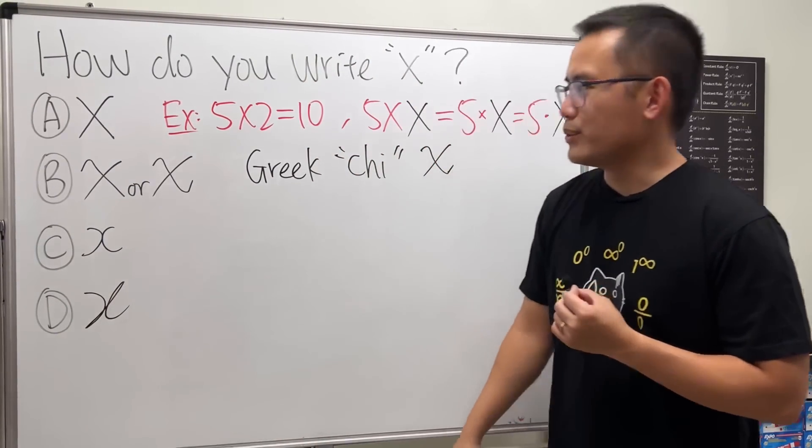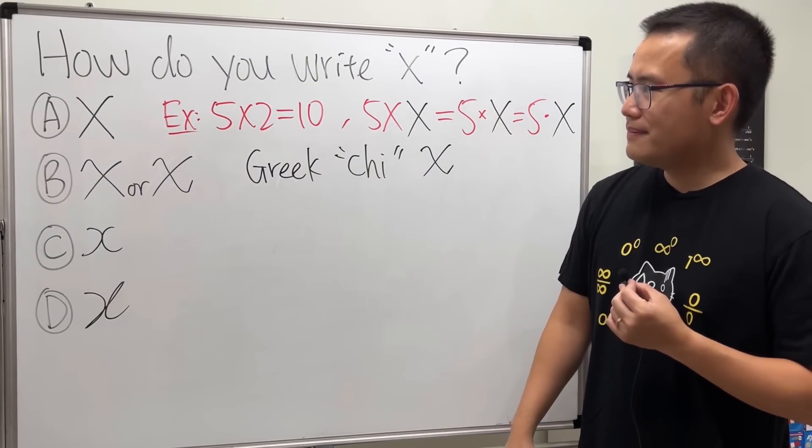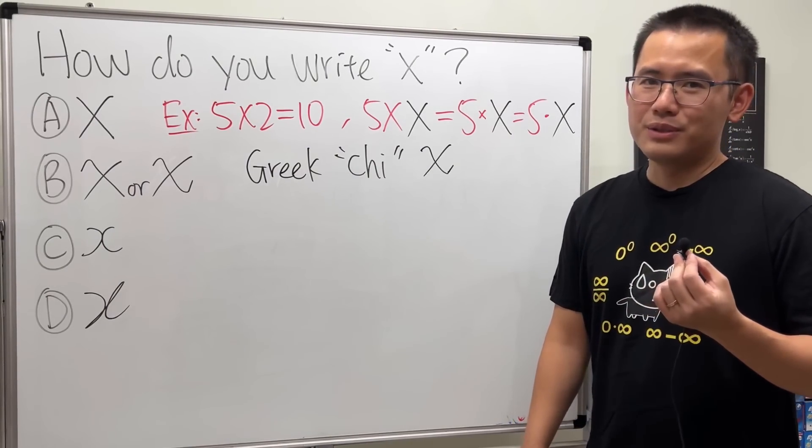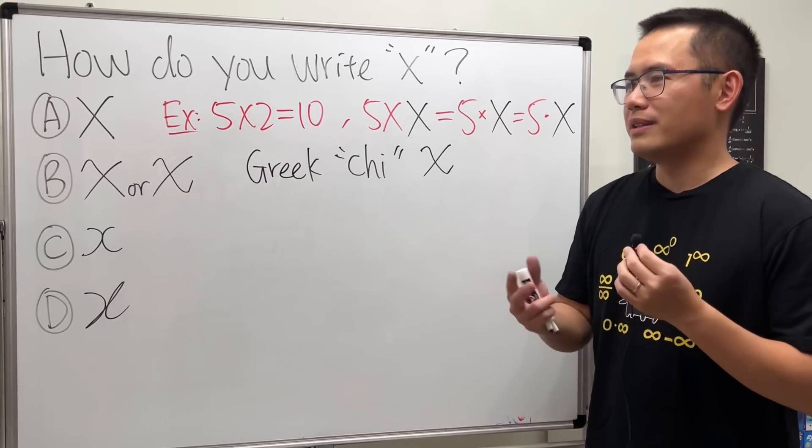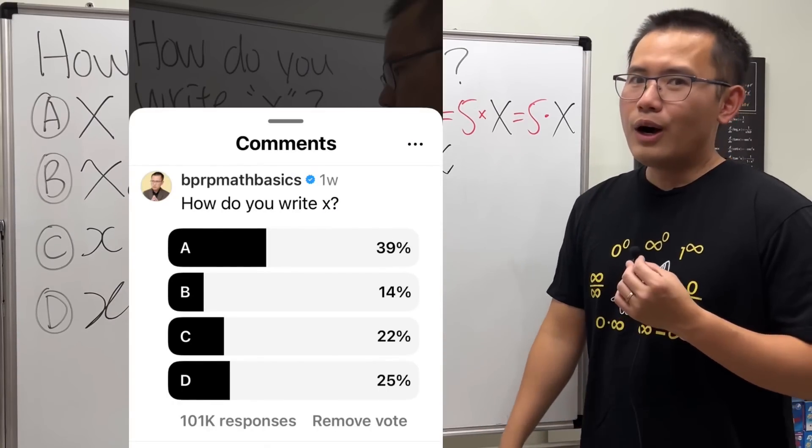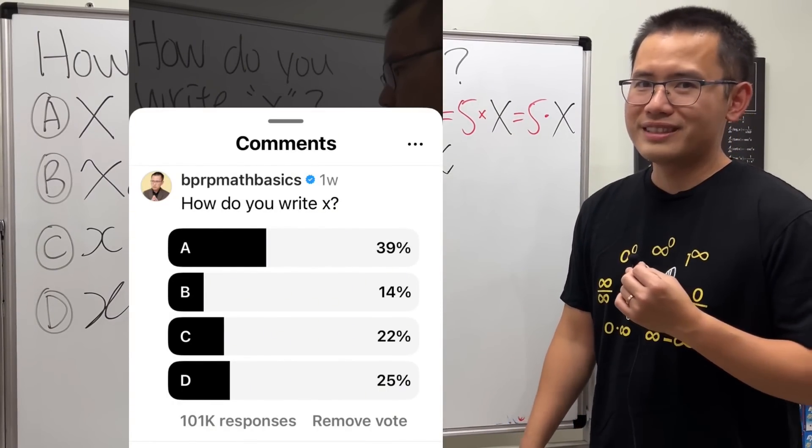That's pretty much it. If you have any thoughts you can leave a comment down below. But right now let me show you the results for my Instagram reel. Have a look: over 100,000 people voted. It is the go-to way to do it.